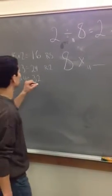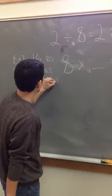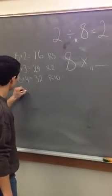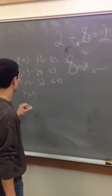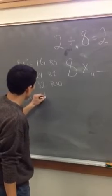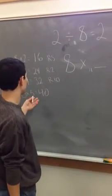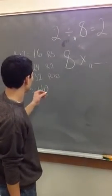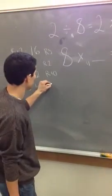10. 10? Yeah, that's right. 10. And then 8 times 5 equals 40. And it goes into this 3 times, with a remainder of 7.